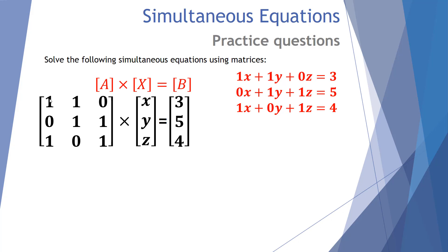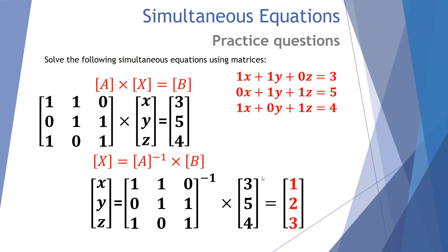So the first equation gives row 1, 1, 0; the second equation gives 0, 1, 1; and the third equation gives 1, 0, 1 in our coefficient matrix. Using the formula — when we have our unknown in the middle, matrix A to the left and matrix B to the right — we find the unknown matrix by computing the inverse of A multiplied by B. We do this and find the answer for x, y and z is simply 1, 2, 3.